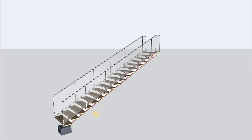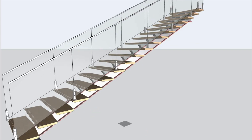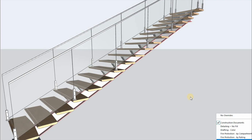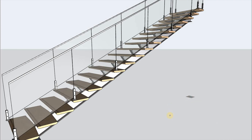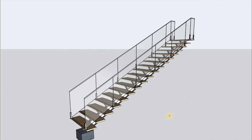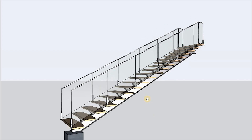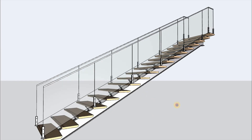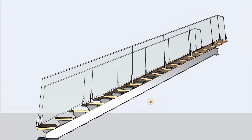The new stair tool consists of multiple sub-elements like building materials, GDL objects, and custom profiles. Examples of these GDLs are treads, risers, beams, and other support components like rails, limbs, and others.